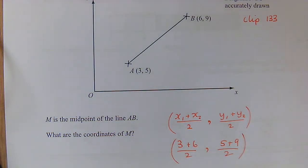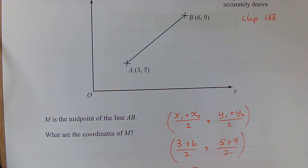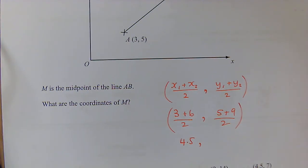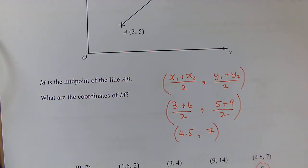So 3 plus 6 is 9, half of 9 is 4.5, and then 5 plus 9 is 14, half of 14 is 7. So 4.5, 7, which is E.